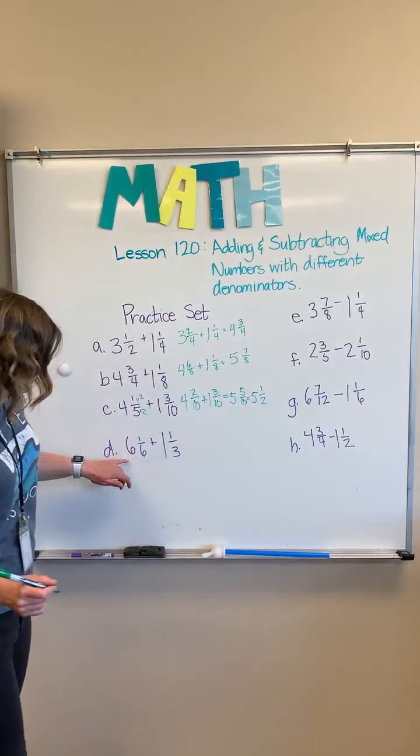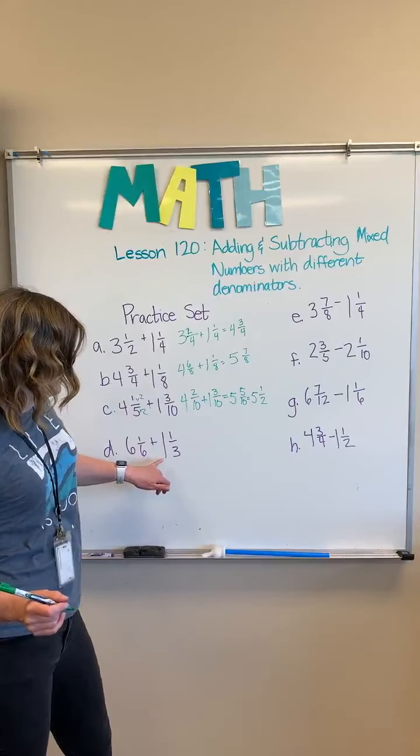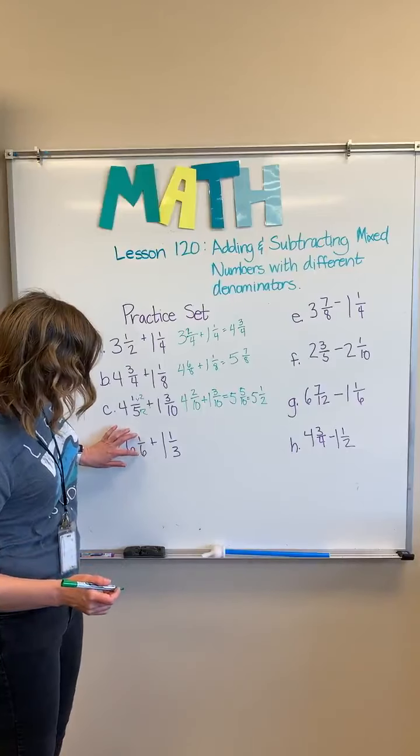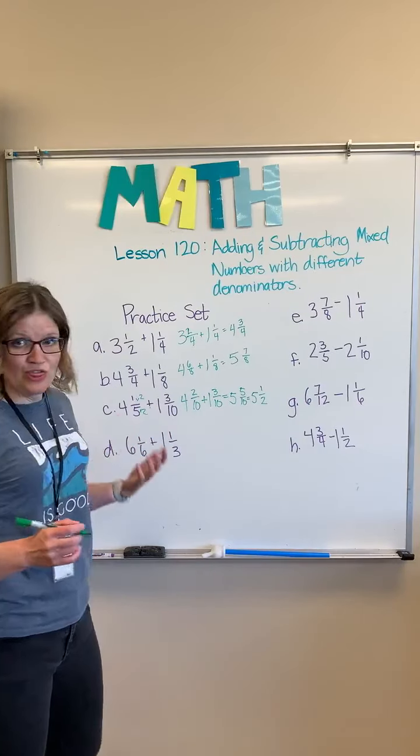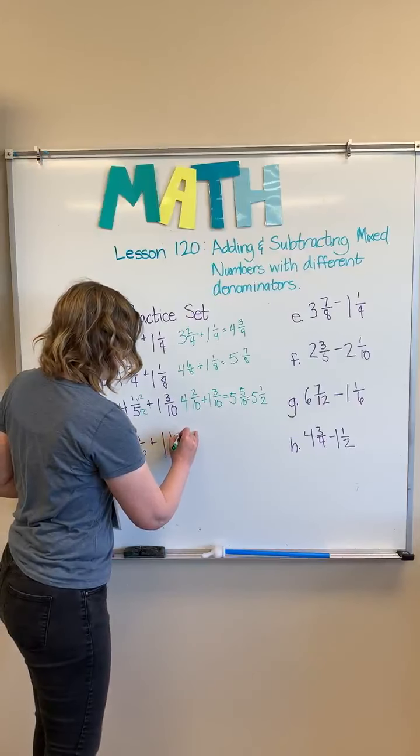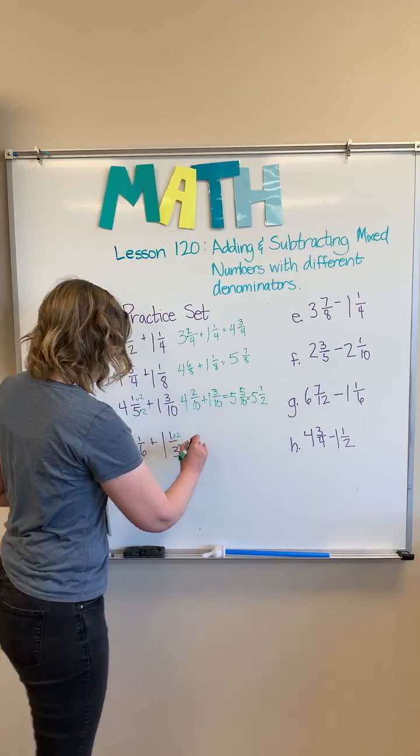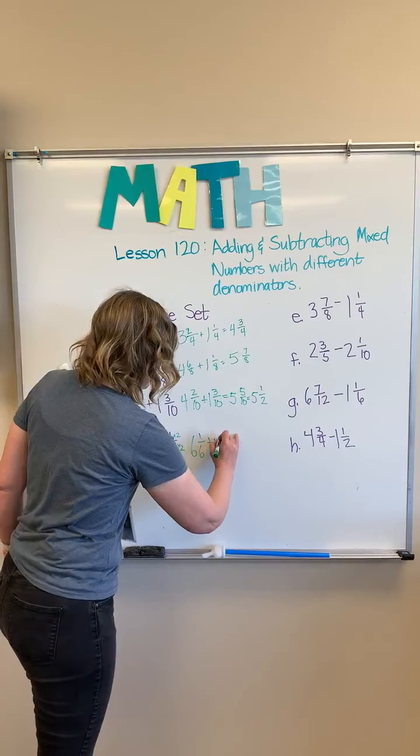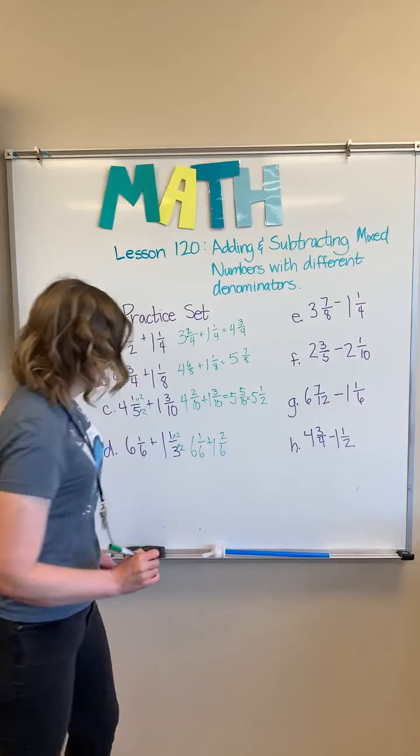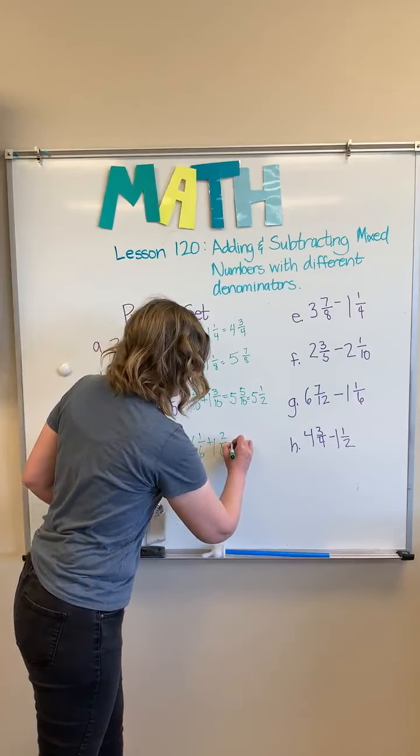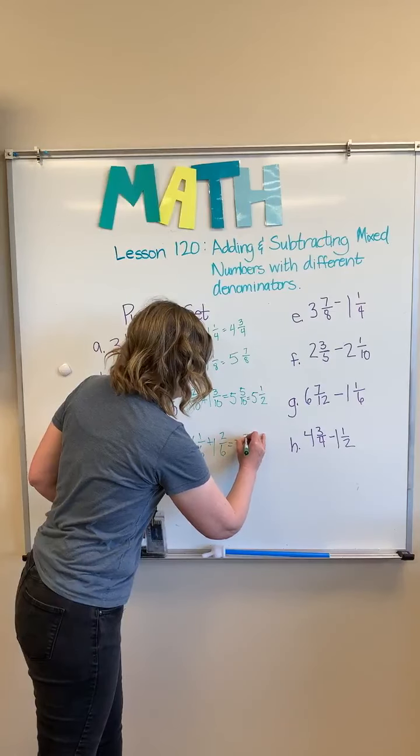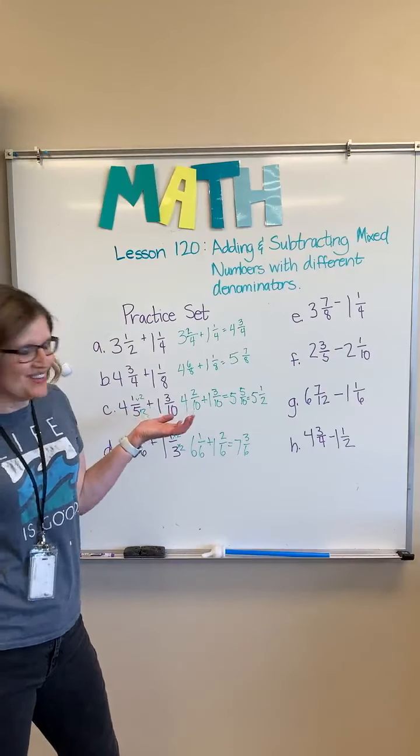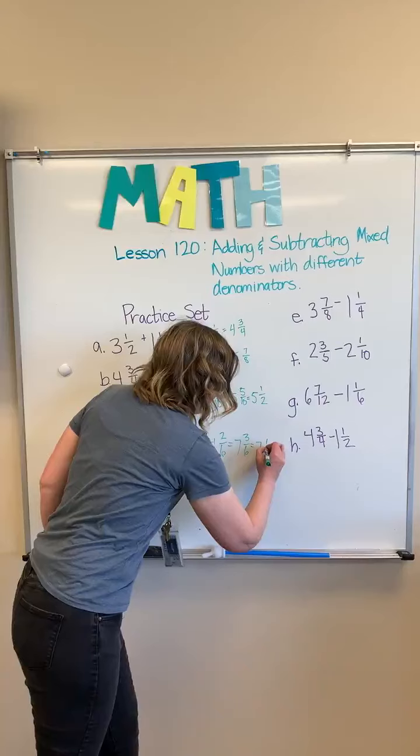Our next one, six and one sixth plus one and one third. I'm going to change my one third by multiplying by two on the top and two on the bottom. So six and one sixth plus one and two sixths, and that equals seven and three sixths. Looking at this again, we know what three sixths is. We've got seven and one half.